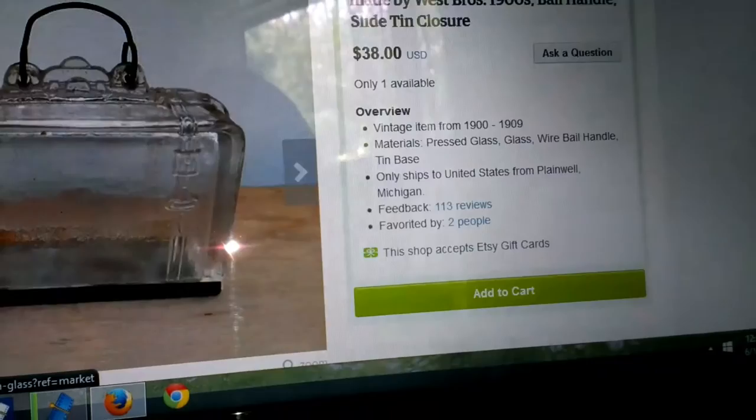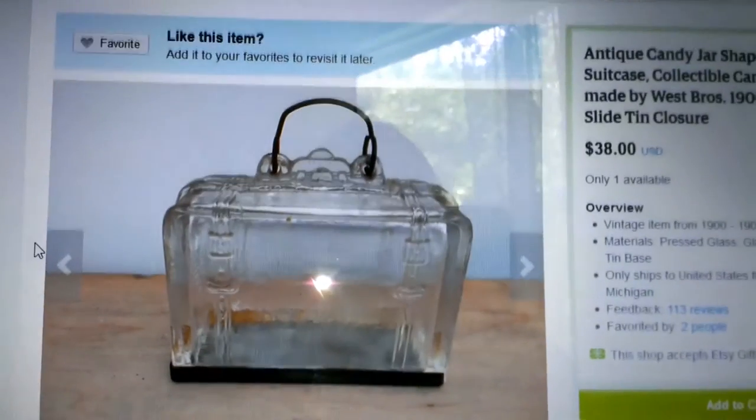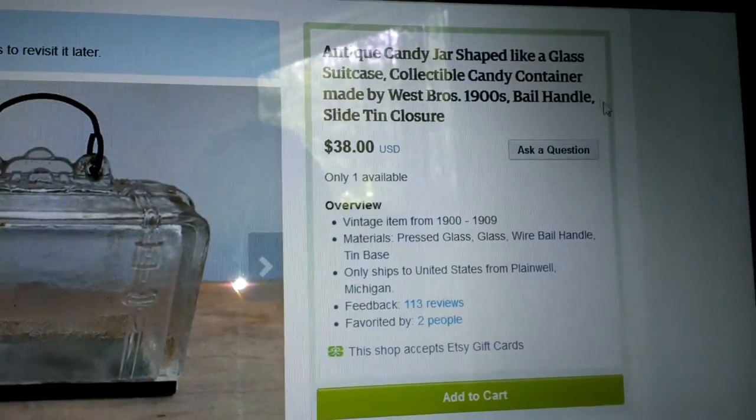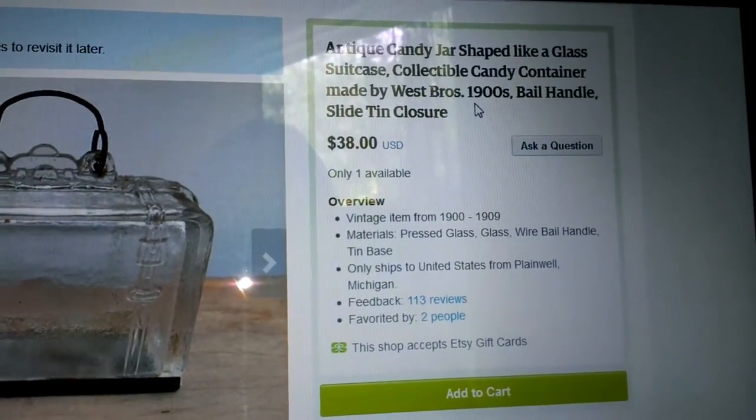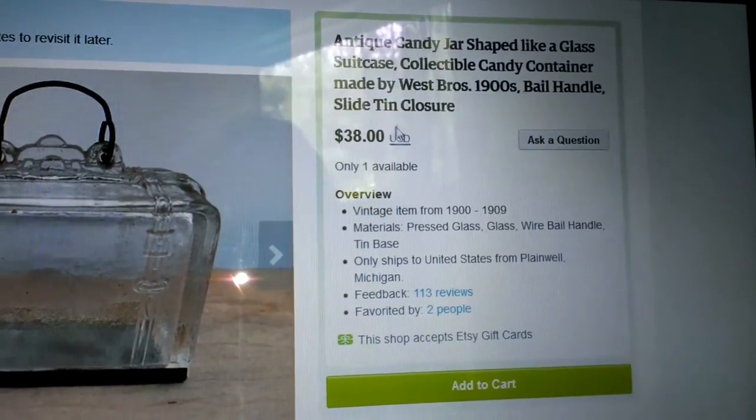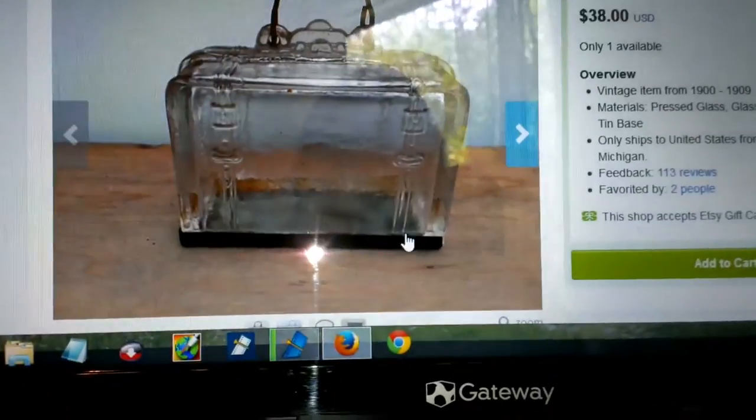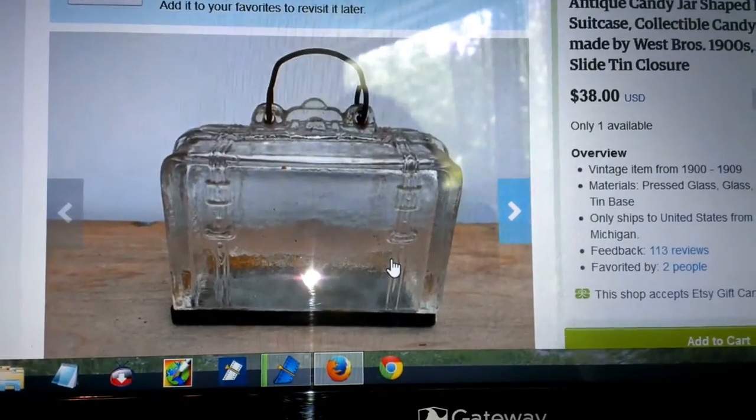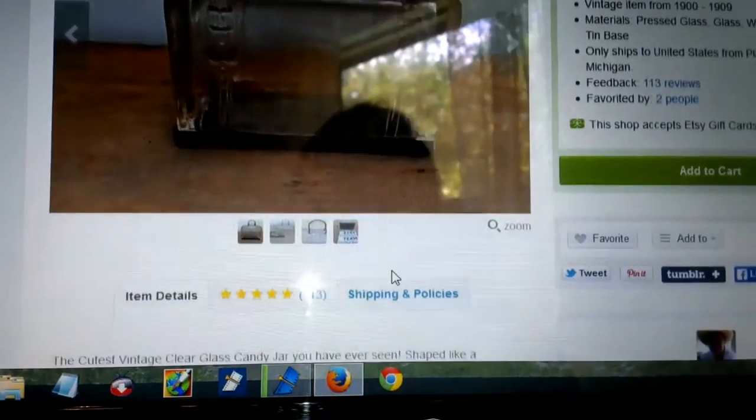Okay. There it is. Antique candy jar shaped like glass suitcase collectible containers. Let's see, made by West Brothers, 1900s, bail handle, slide 10 closure. It would have had the tin bottom. That's much like the little chicken that I found in the little car that I found.